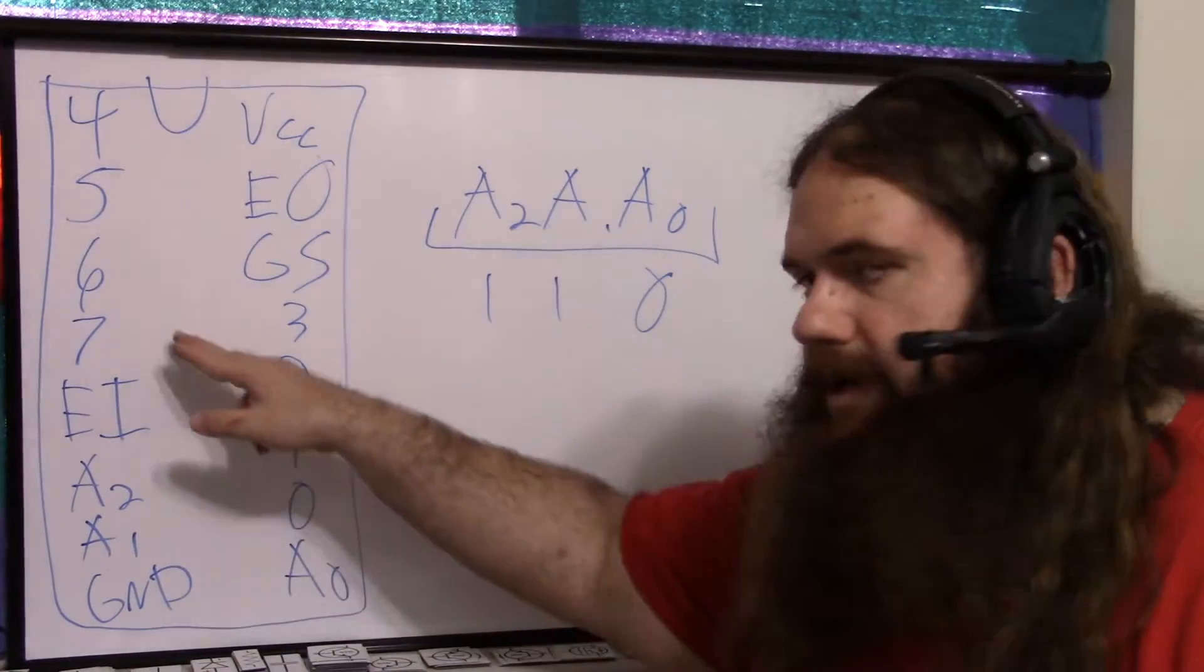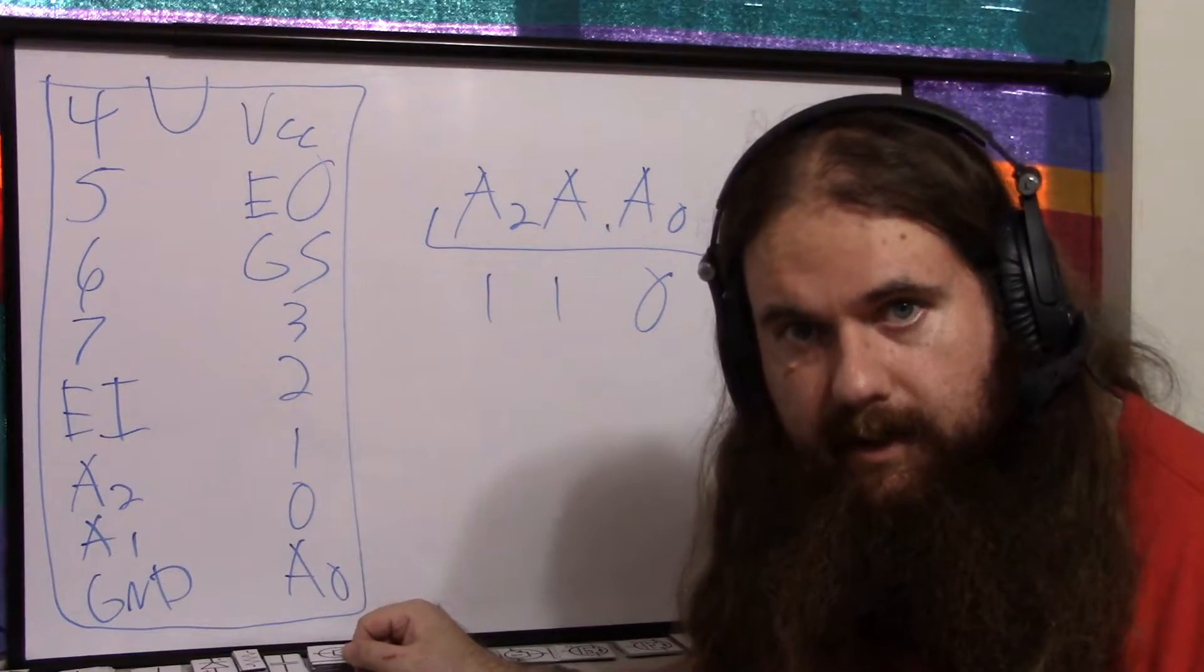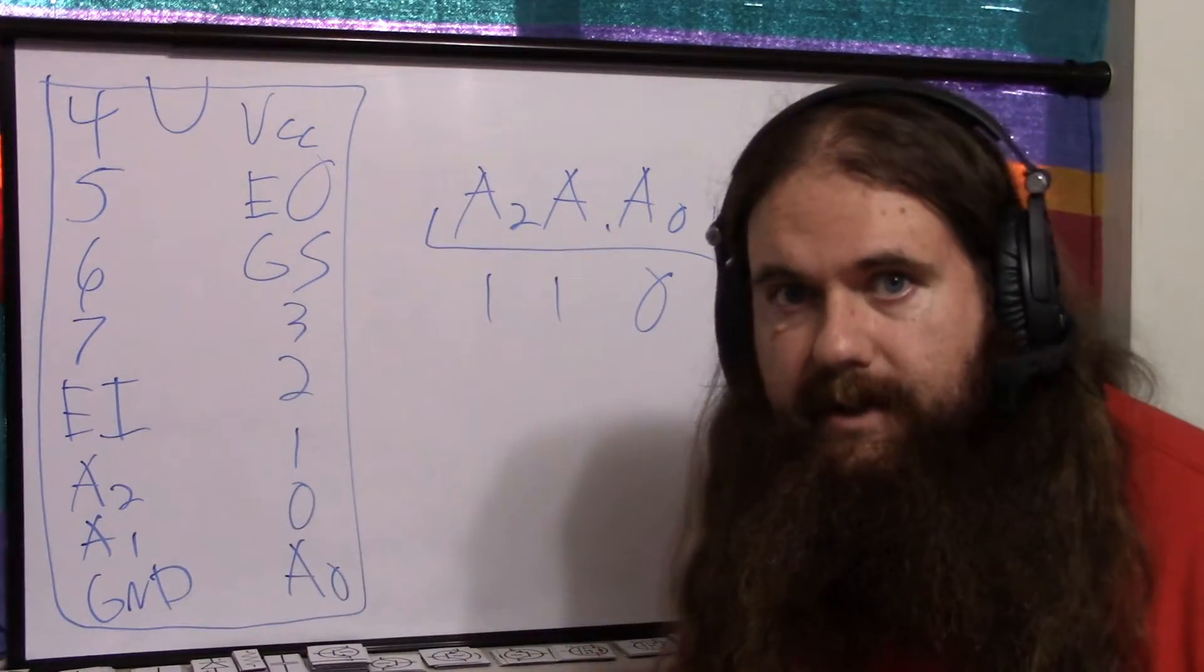So 0 through 7 are your inputs and then it'll give you this number as your output, whichever of these is high. 7 is the highest priority and 0 is the lowest. So if 5 is on and 2 is on, it's just going to tell you 5.